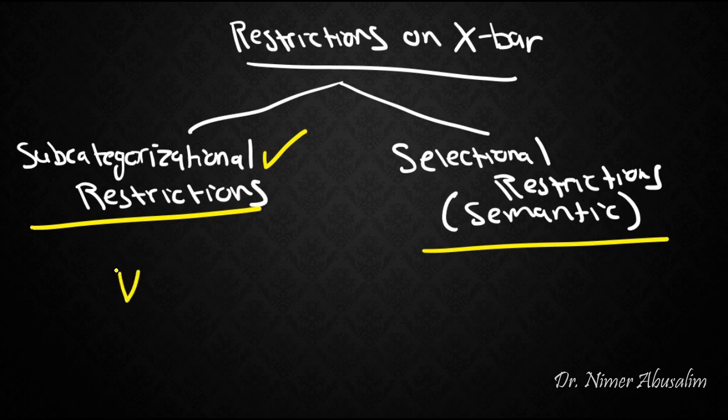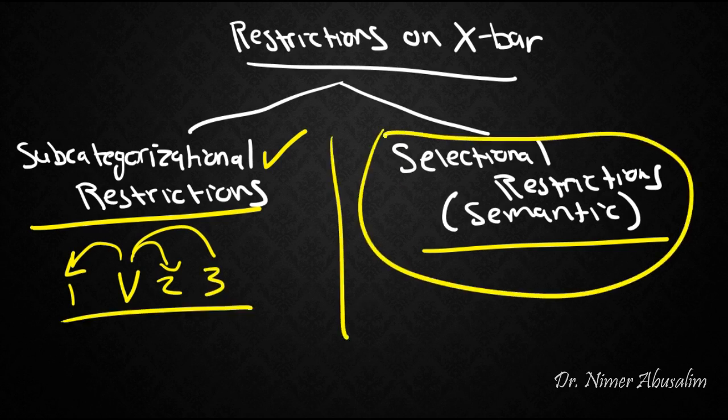If you recall, these are the restrictions that tell us how many arguments each verb could have: whether it could have one argument before, or one argument before and one after, or two after. In this lecture, we focus on the second part, which is the selectional restrictions, those of semantic nature.